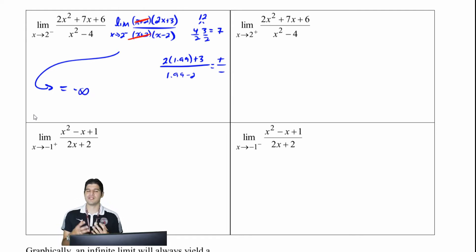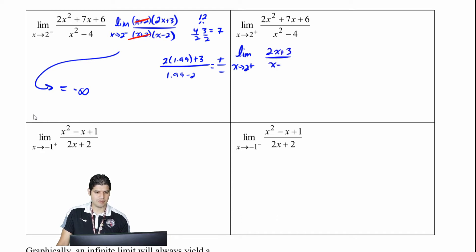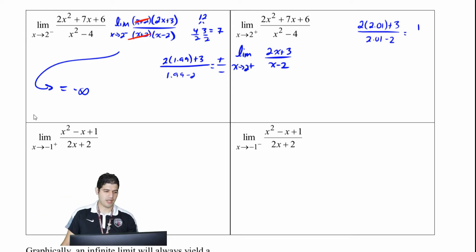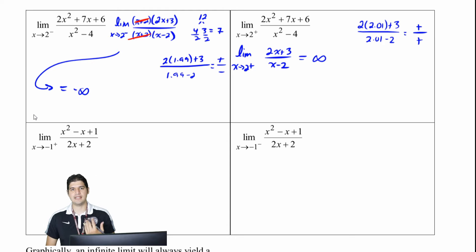And that's confirmed by the result from the graph on our previous page. Now let's look at the limit as x approaches 2 from the right side. I've already done the factoring, so I just rewrite: limit as x approaches 2 from the right of 2x plus 3 over x minus 2. Using a value greater than 2, so 2.01: 2 times 2.01 plus 3 all over 2.01 minus 2. The numerator is all positive, and in my denominator, 2.01 minus 2 gives me a very small but positive number. So positive over positive gives me positive infinity — confirmed from our graphical analysis.